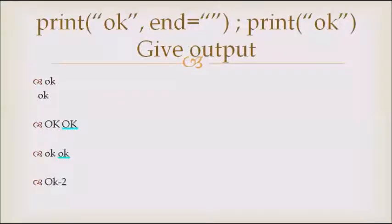Let's see the next question now. Print 'okay' with a separator and semicolon, print 'okay'. Now we have to select the best output. The thing to be kept in mind is what this thing is doing: line continuation means we are going to print in the same line. Two 'okays' will come in the same line, so we have these two options where two 'okays' are coming in the same line. But if once again we see it properly, we'll find 'okay' written both in small cases, so this option seems correct.